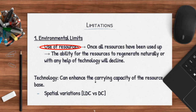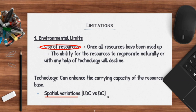Technology can enhance the carrying capacity of the resource base — meaning that with technology, I can actually enhance the amount of resources that I have. For example, things like hydroponics, whereby they make use of advanced technology to actually grow fruits and crops, as well as GM crops. These are technologies which help to expand the amount of food resources. But do also acknowledge that there are spatial variations — less developed countries have lesser, weaker technology, so their ability to enhance this carrying capacity is greatly reduced.